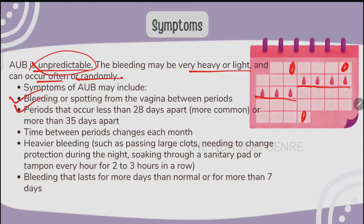Periods that occur less than 28 days apart or more than 35 days apart are a symptom. The time between periods may change each month.